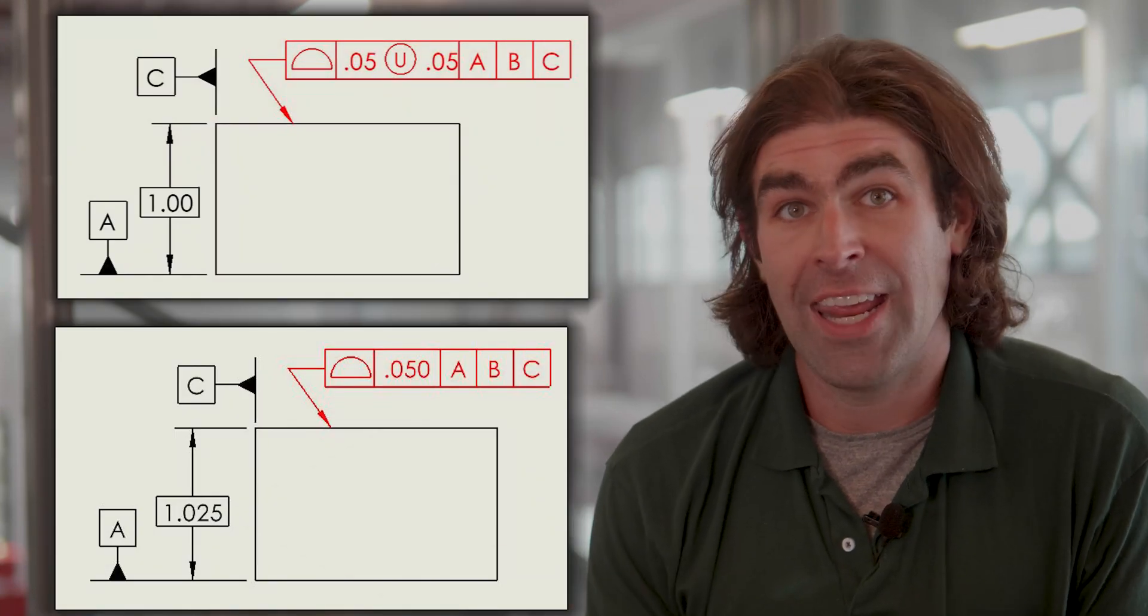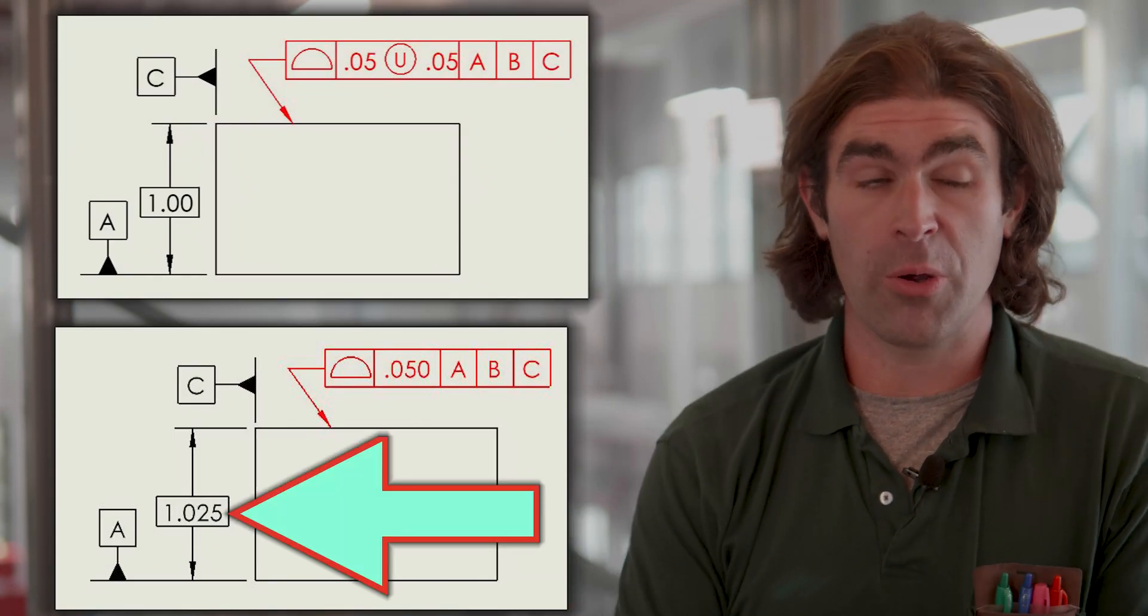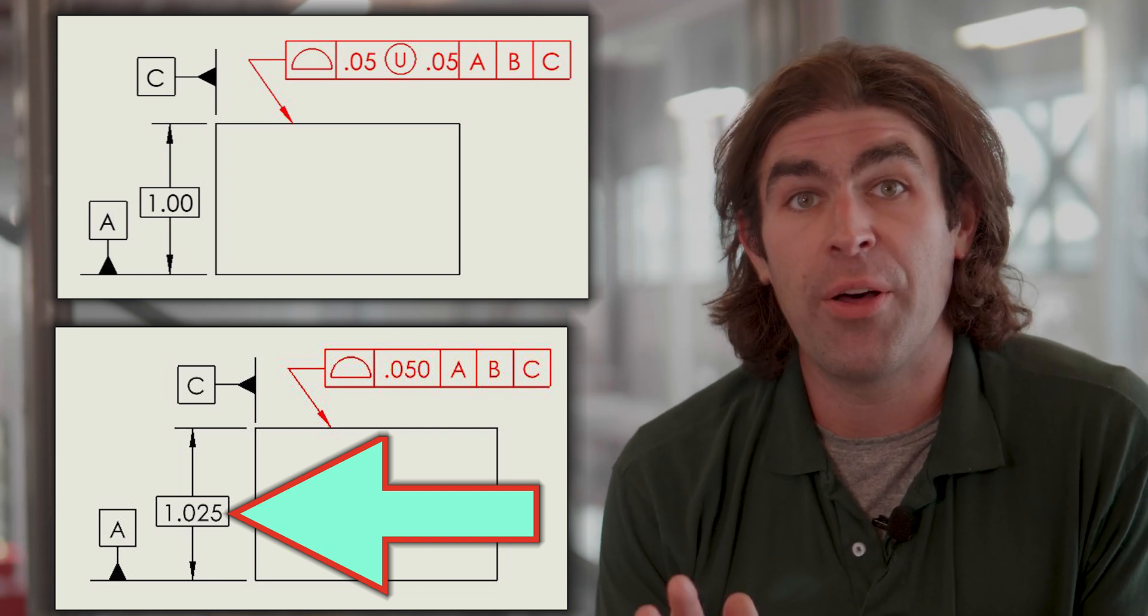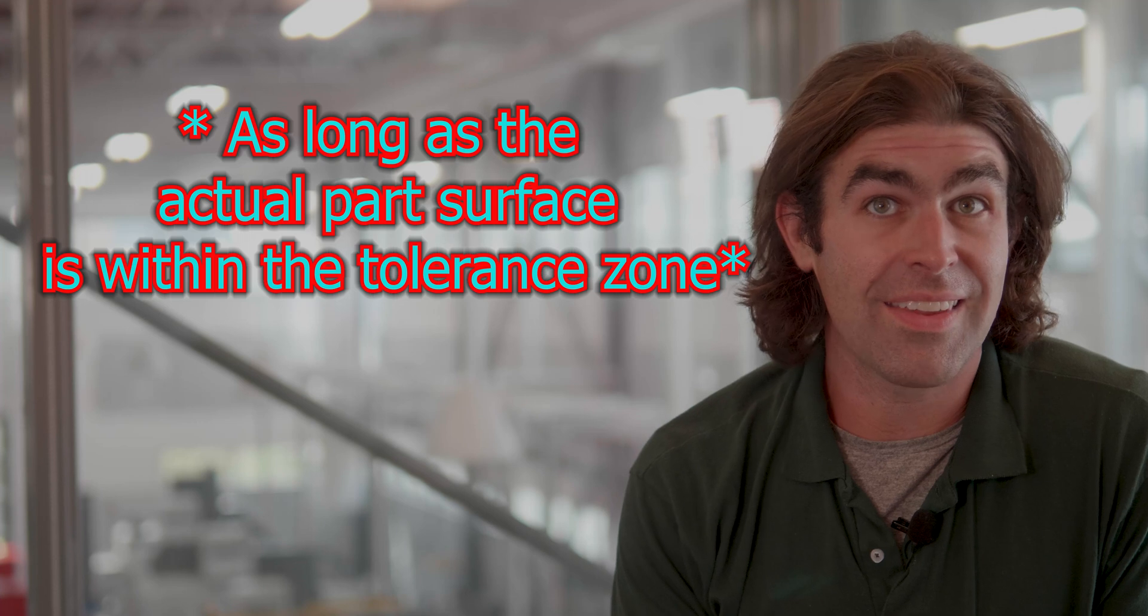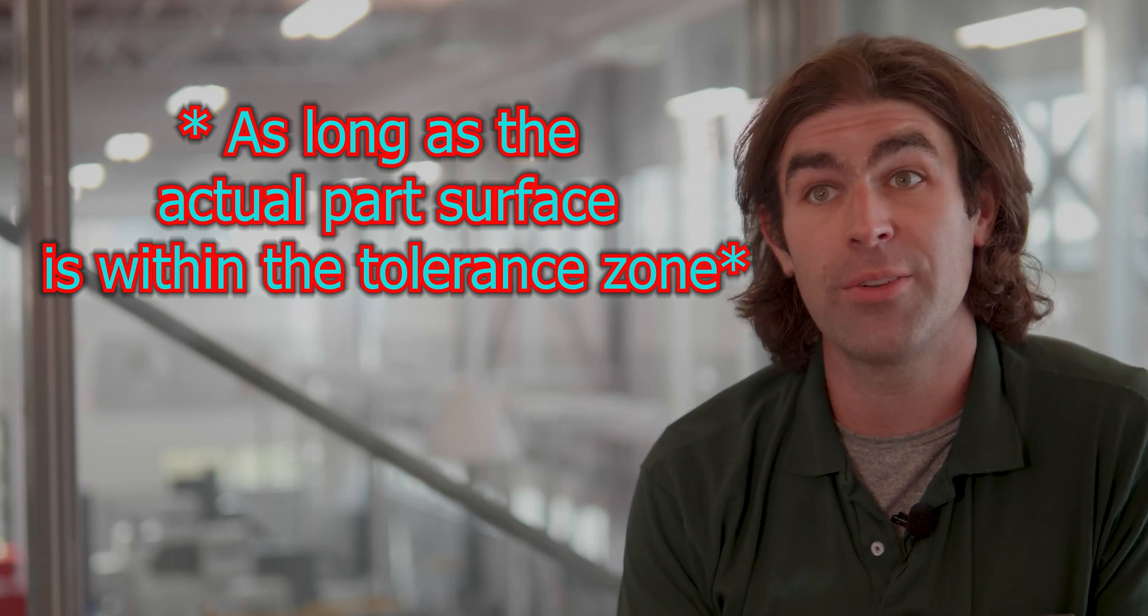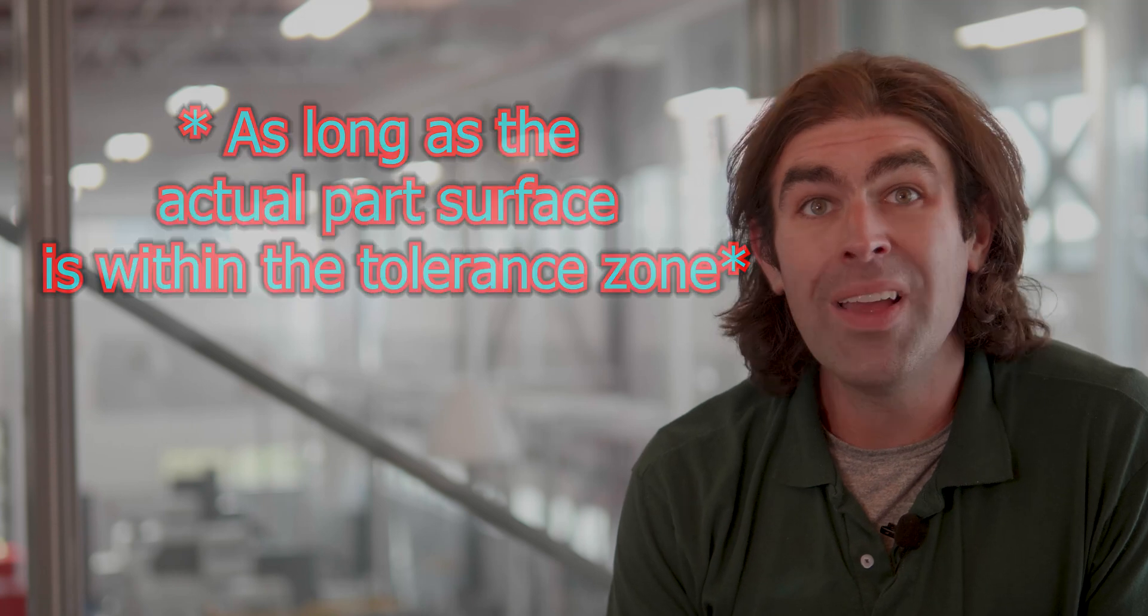Each of these tolerances would mean the same thing if you just change the basic dimension. So there's no specific instructions on how the machinist should manufacture something. They can make it however they want. They can be really close to one side or really close to the other. Just because you specify a bilateral equal doesn't mean they're always going to aim for the middle of that tolerance zone. Their process might be better for them if they aim to make the part bigger or smaller.